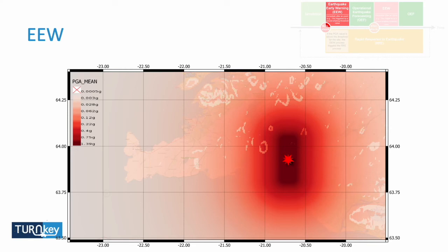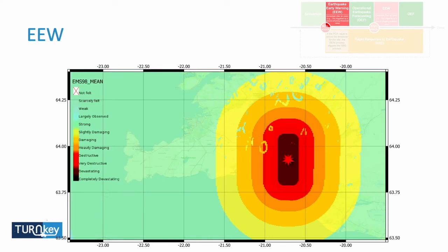This is useful for stakeholders to give them an idea of the affected area — where could be most affected by the earthquake. These results can be plotted in terms of peak ground acceleration (PGA) as well as intensity, following the European Macroseismic Scale (EMS). The intensity provides a qualitative classification of how the earthquake was felt.